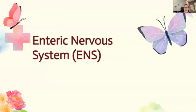We're going to talk about the enteric nervous system, also referred to as the ENS. It's often considered a separate subsystem within the PNS. The enteric nervous system regulates gastrointestinal tract function independently of the CNS. It controls digestion, nutrient absorption, and gut motility through a network of neurons embedded in the walls of the digestive organs.